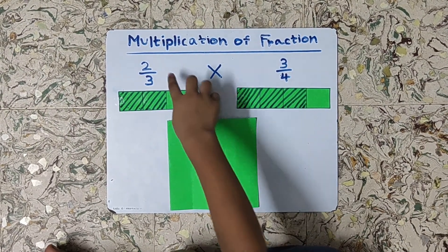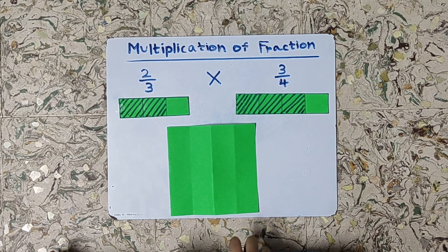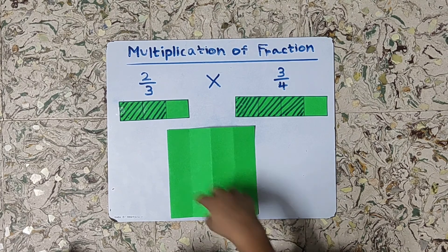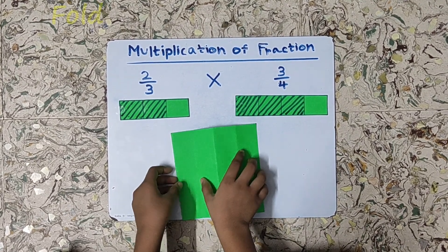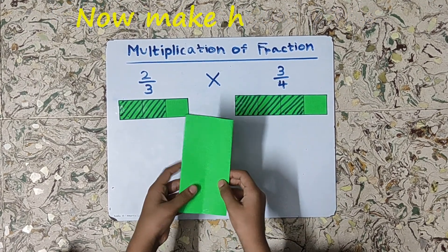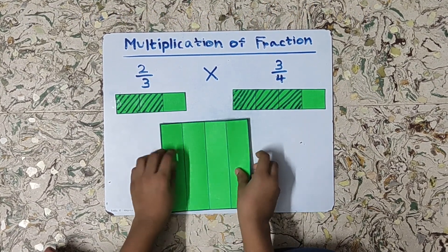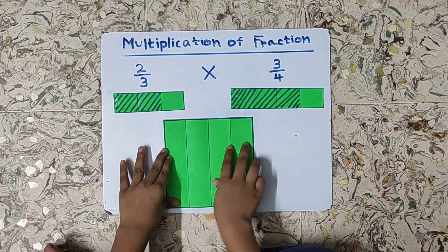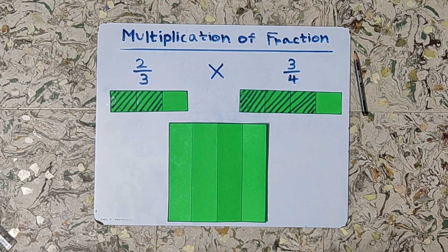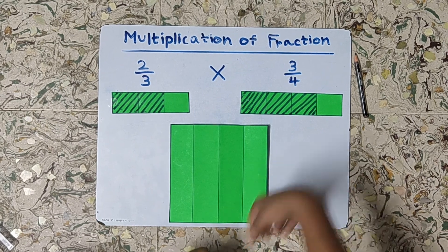For multiplying these two numbers I have taken a square paper. As the denominator of three-fourths is four, we need to fold the paper into four equal parts first. Fold it like this, then fold it again. Now open the paper. We have four equal parts: one, two, three, and four. Now I will shade three parts among these four parts because the numerator is three.